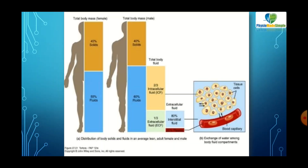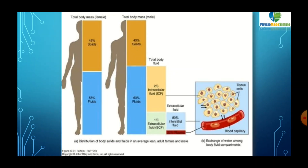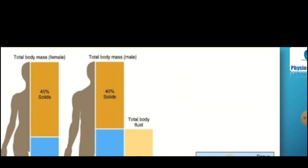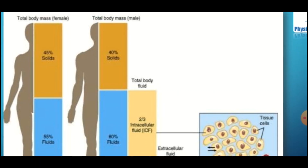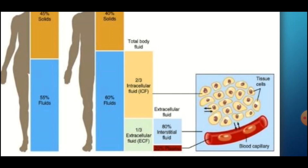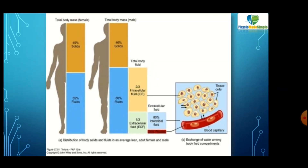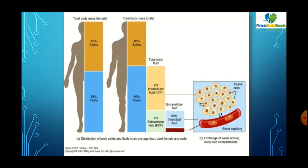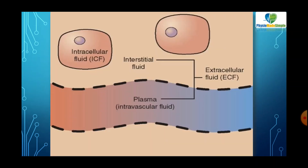To summarize: 40% of the body is made up of solids and 60% is made up of fluids. Of that fluid, two-thirds forms the intracellular fluid and one-third forms the extracellular fluid. The extracellular fluid is again divided into interstitial fluid and intravascular fluid or blood plasma.